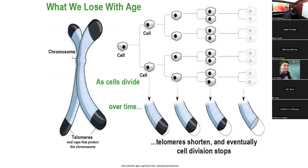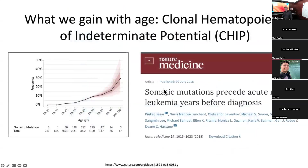Now I want to think about what else changes as we age. One thing that changes is telomeres — they shrink as we get older, on average getting shorter in every cell over time. Another thing that happens is we all accumulate more cell mutations. One place they really occur and are selected for is in your bone marrow, in something called clonal hematopoiesis of indeterminate potential.